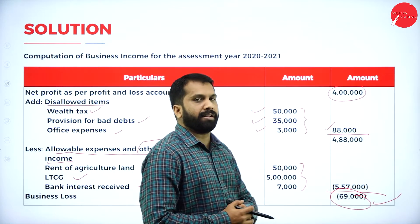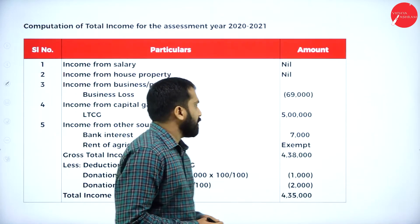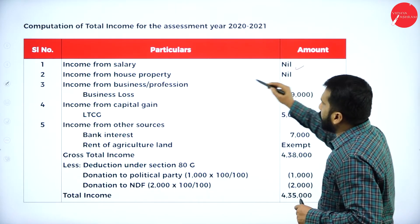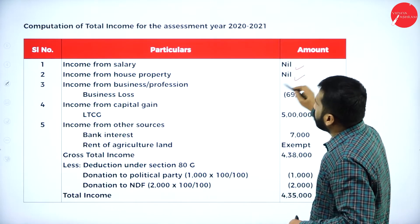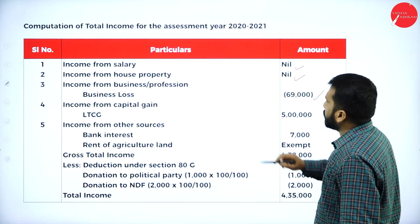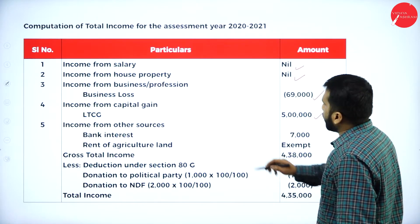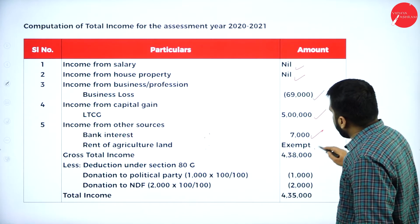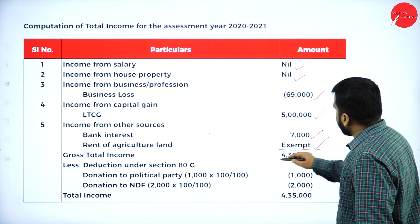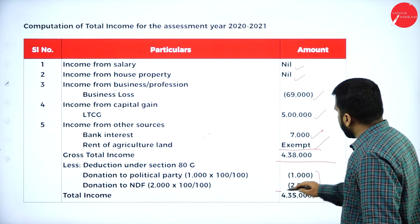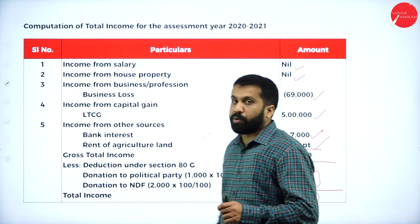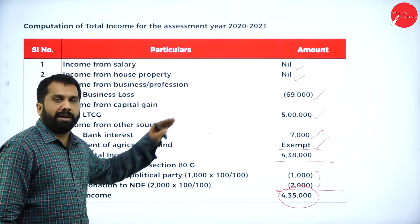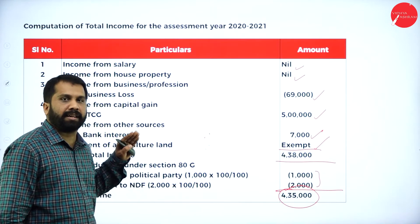Now we will find out total income. Income from salary: nil. House property not given in the question: nil. Business income: it is not income, it is a loss of 69,000. Capital gain: 5 lakh. Bank interest: 7,000. Agriculture is exempt. After accounting for 2 donations, your total income is 4 lakh 35,000. We have calculated only your total income, not taxable income.